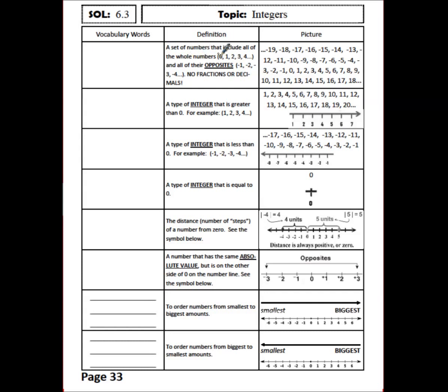A set of numbers that include all of the whole numbers and all of their opposites — no fractions or decimals. Now these are a bunch of examples of integers.